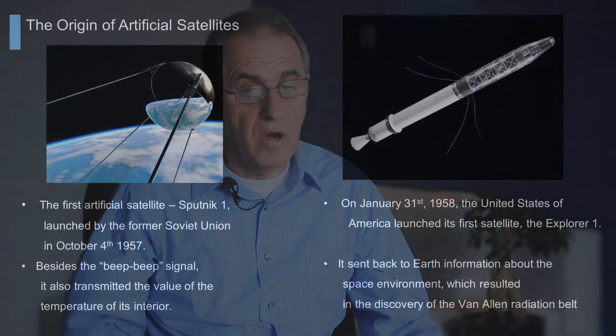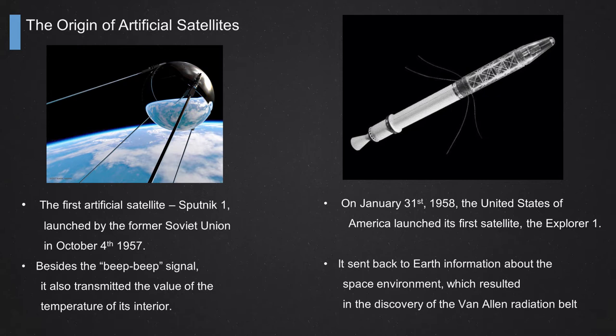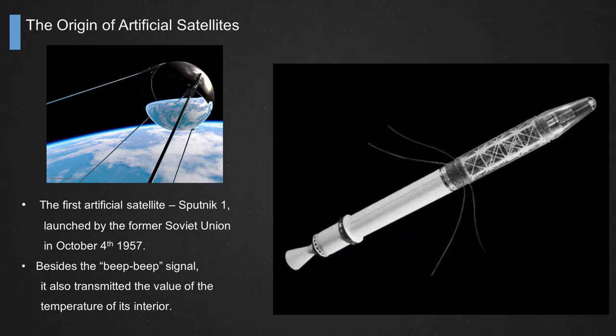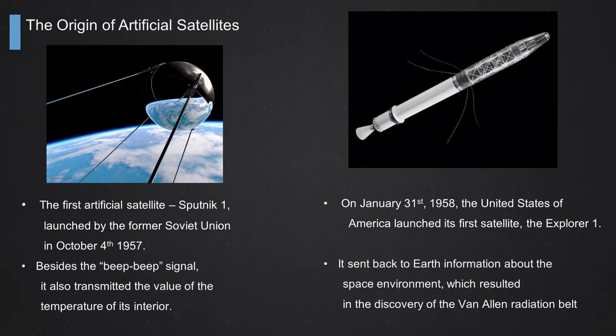It proved we can send a spacecraft into orbit and maintain it for a certain period - a very, very important step. Just after that, in January 1958, the United States sent their first satellite, called Explorer 1. It was very important scientifically because it led to the discovery of the Van Allen radiation belt - a very important step for space exploration.